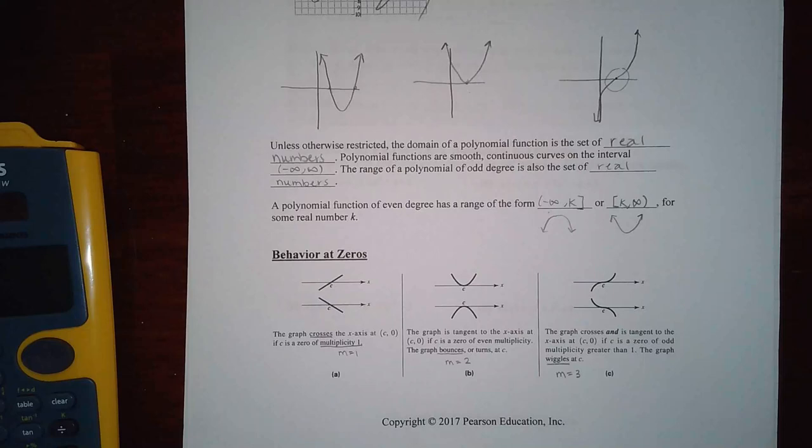And then if it's reflected over, then it would do the other kind of wiggle. So there's three different kinds of behavior, crossing, bouncing, and wiggling.